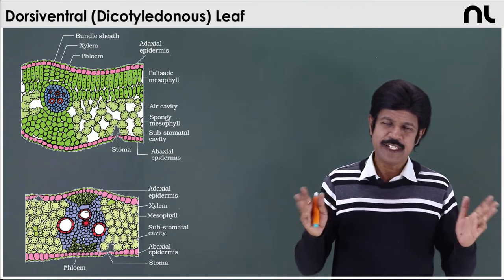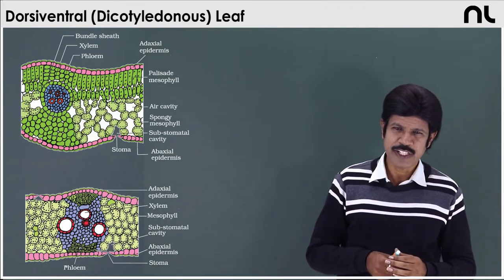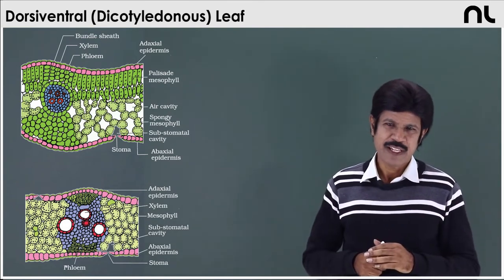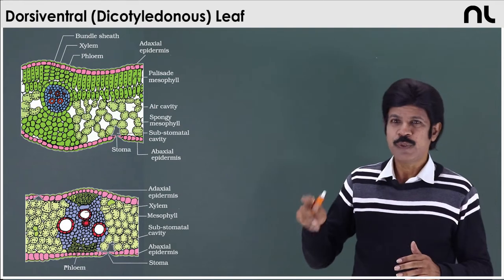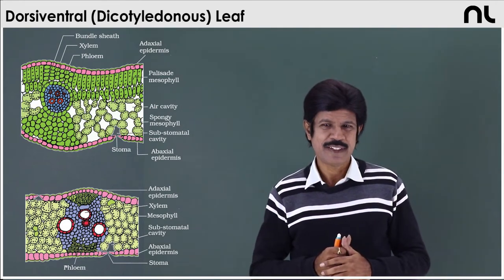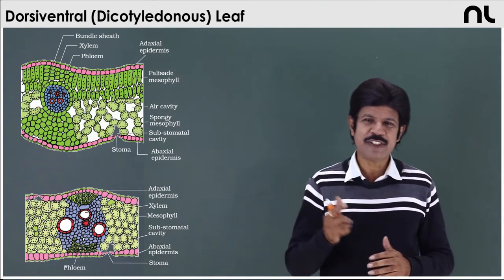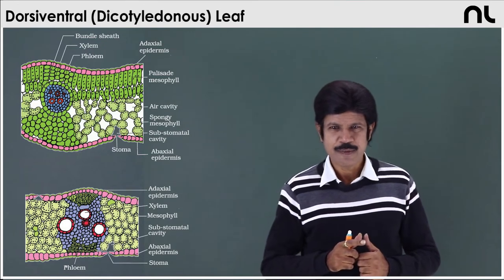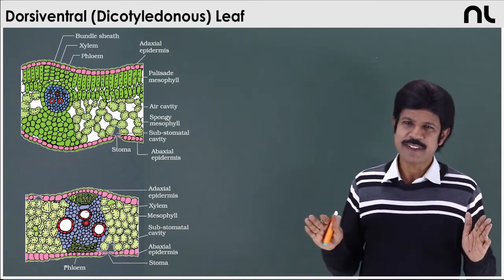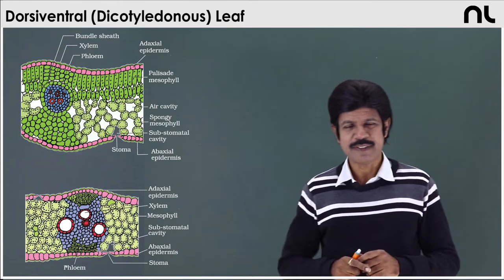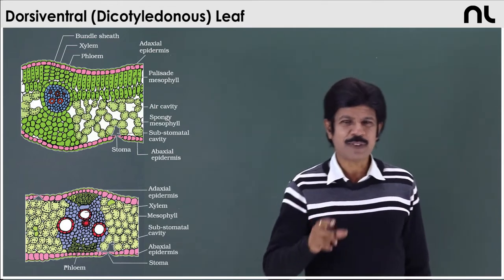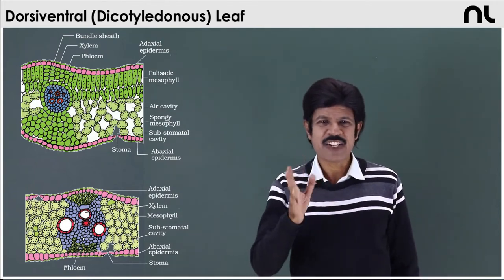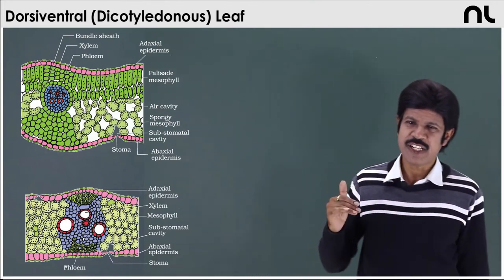Going into the transverse section (TS) of the leaves — dicot and monocot leaf. Both leaves have upper epidermis and lower epidermis. As it is a flat appendage, we do expect upper and lower epidermis. If it were a cylindrical appendage, there would be no upper and lower epidermis. The upper epidermis is called adaxial epidermis, and the lower is called abaxial epidermis.